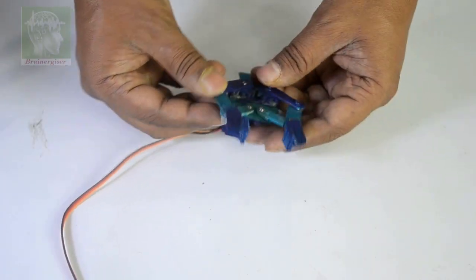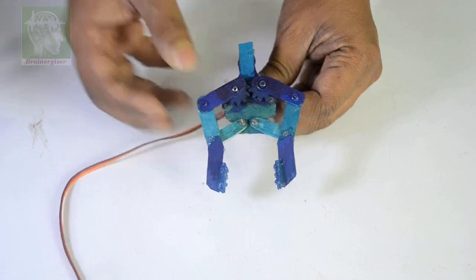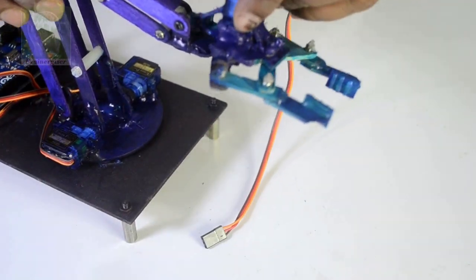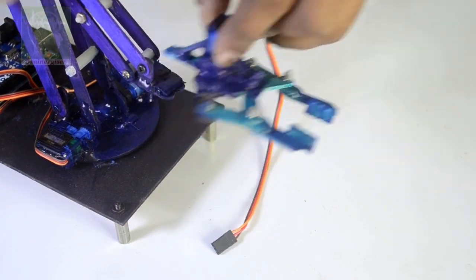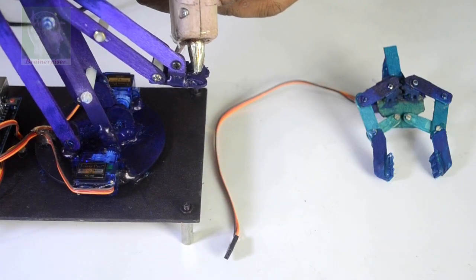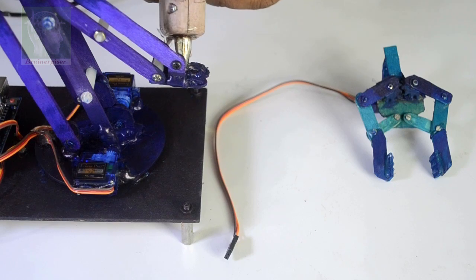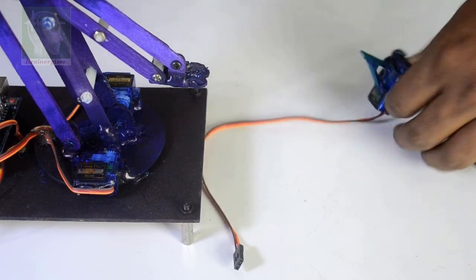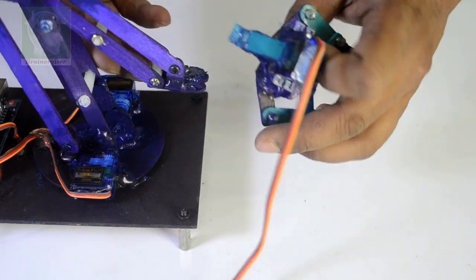This is the gripper which I made in the previous video. For the link see in the description. This I am going to glue at the front or with using a screw I'll fit. We can use other grippers but for this project I am going to use this gripper. So glue that at the front.